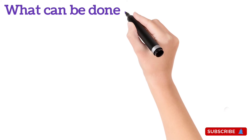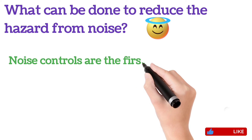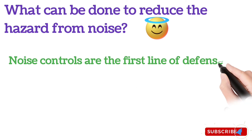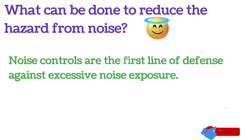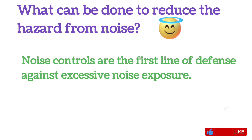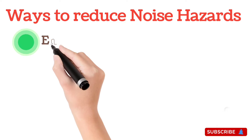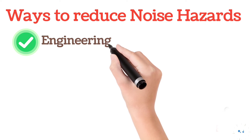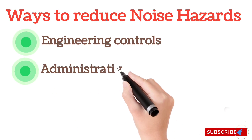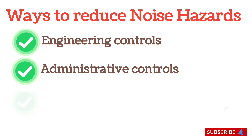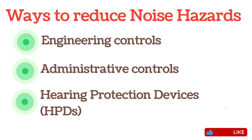What can be done to reduce the noise hazards? Noise controls are the first line of defense against excessive noise exposure. The ways to reduce noise hazards are: first, engineering controls; second, administrative controls; and third, hearing protection devices (HPDs).